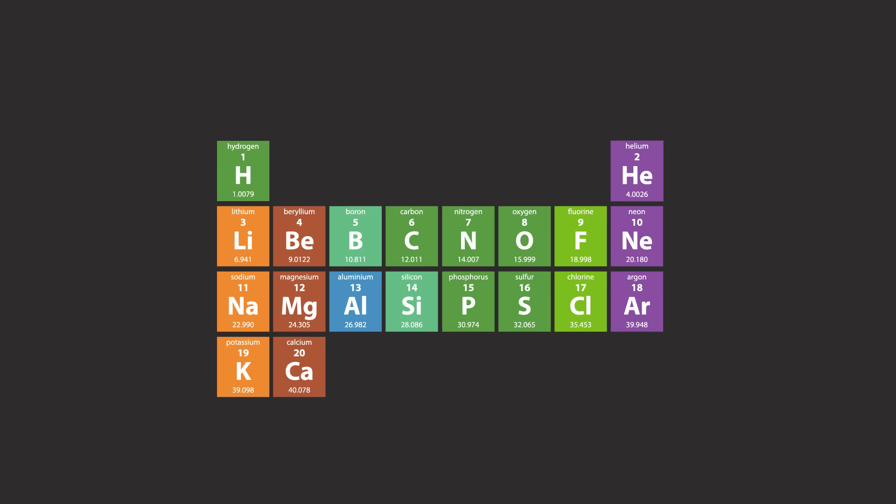In summary, we've seen that the number of electron shells corresponds to an element's period number, and the number of valence electrons corresponds to an element's group number.